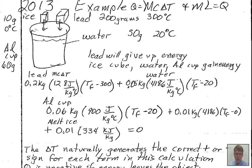For the water: 50 grams becomes 0.05 kilograms. The specific heat for liquid water is 4186 joules per kilogram per degree Celsius. Since we don't know the final temperature, its delta T is TF minus 20. For the aluminum cup, its mass of 60 grams is 0.06 kilograms, specific heat is 900 joules per kilogram per degree Celsius, and delta T is the same as for the original water: TF minus 20.